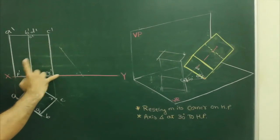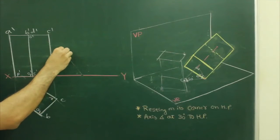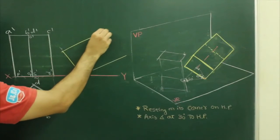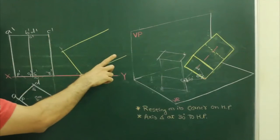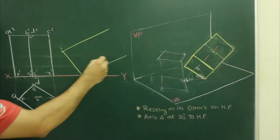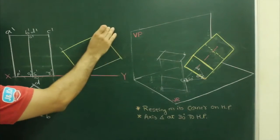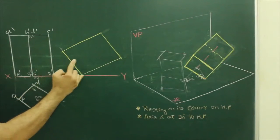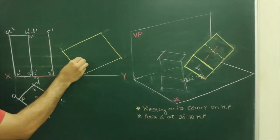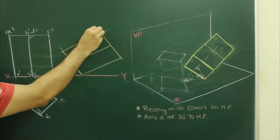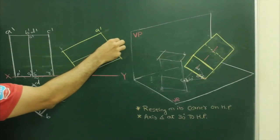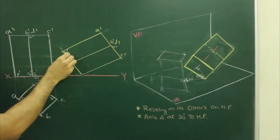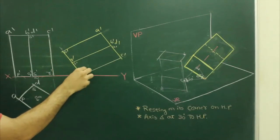Take this distance P dash R dash, cut on this side. Take this height, cut on this. And take this distance, cut on this side. So this is A dash, B dash, D dash, C dash, O dash, and this is B dash, Q dash, S dash, R dash.